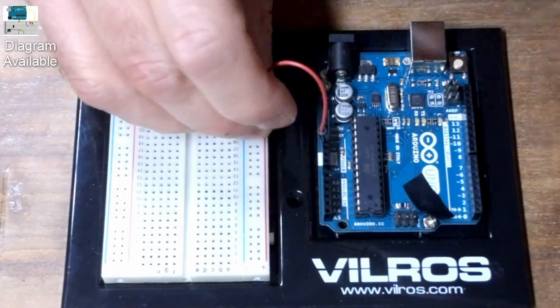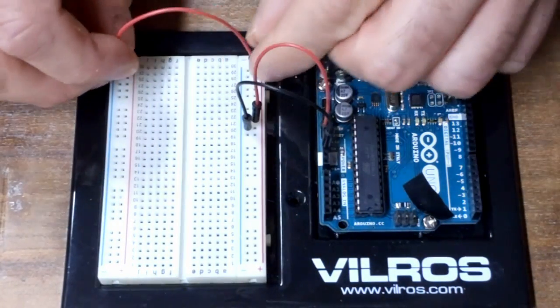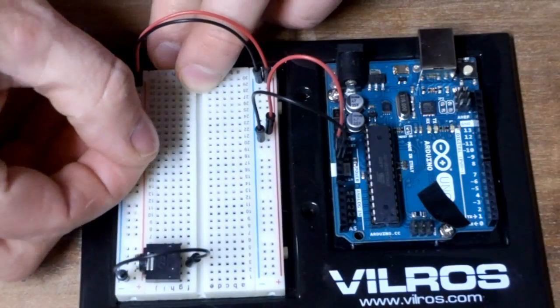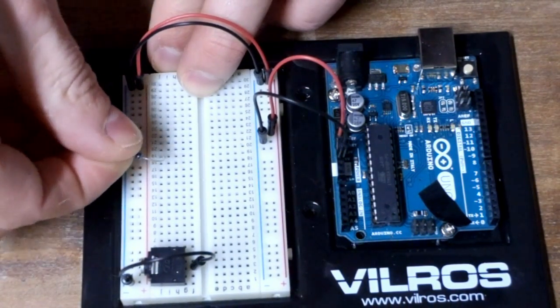The Arduino can only detect positive voltages in its analog inputs. The audio signal will run between positive and negative voltages. To handle this, I set up a voltage divider using two equal resistors connected in series from the Arduino 5 volt connection and ground.